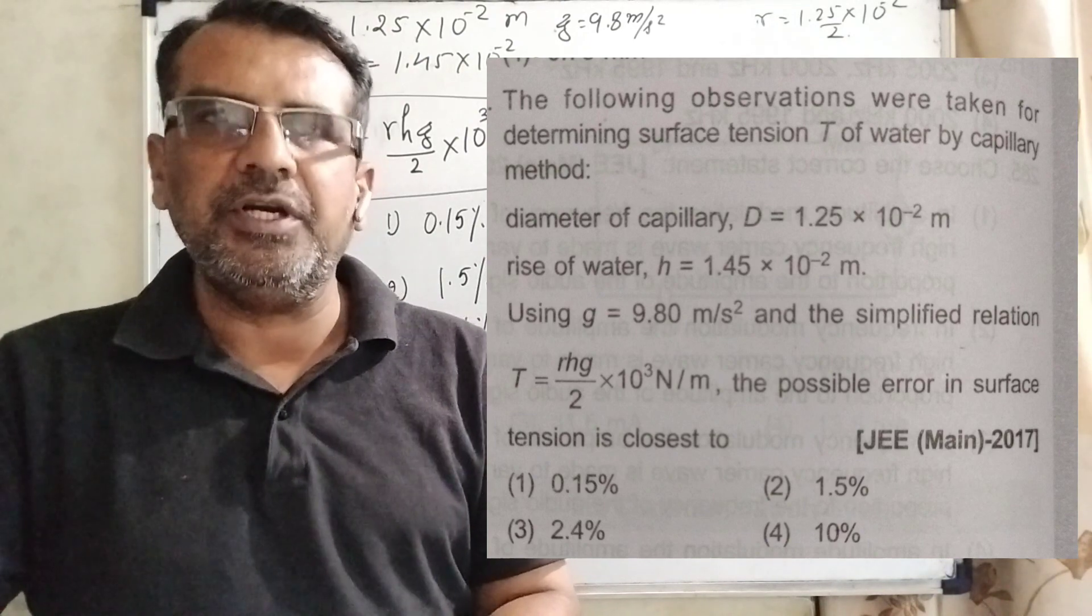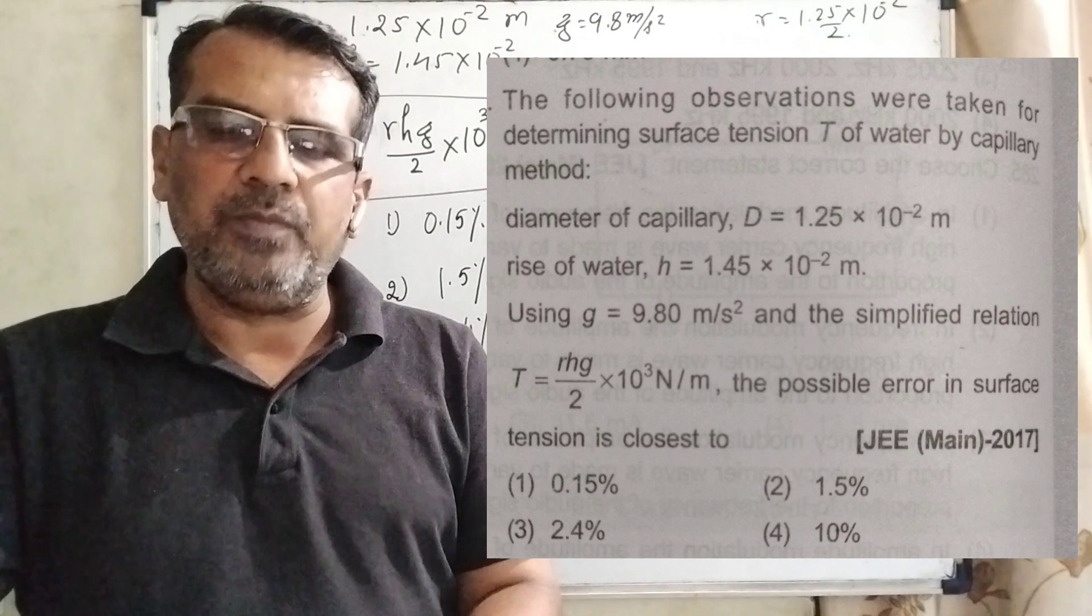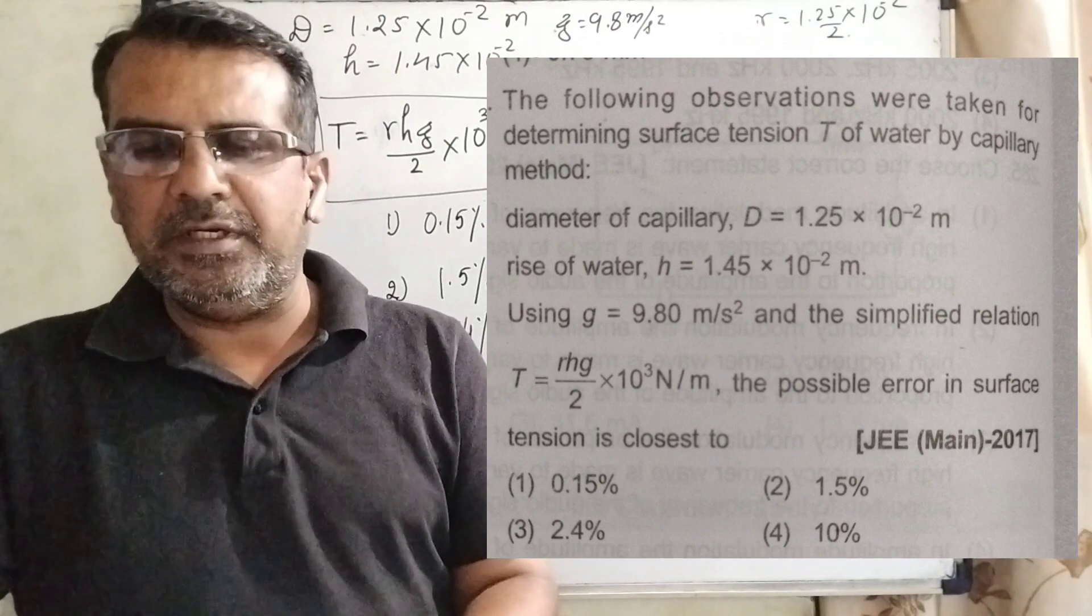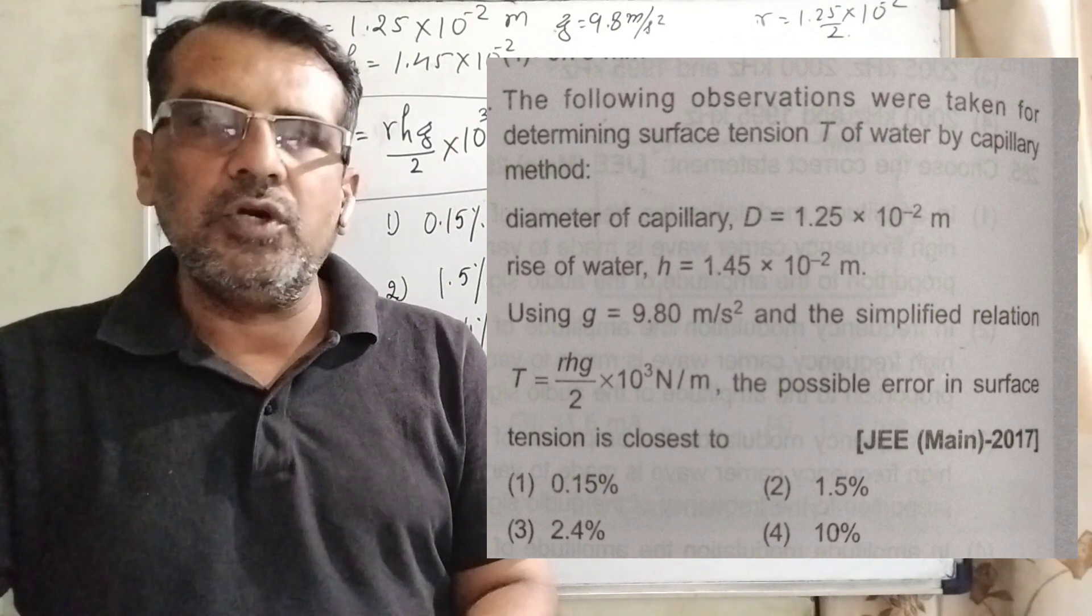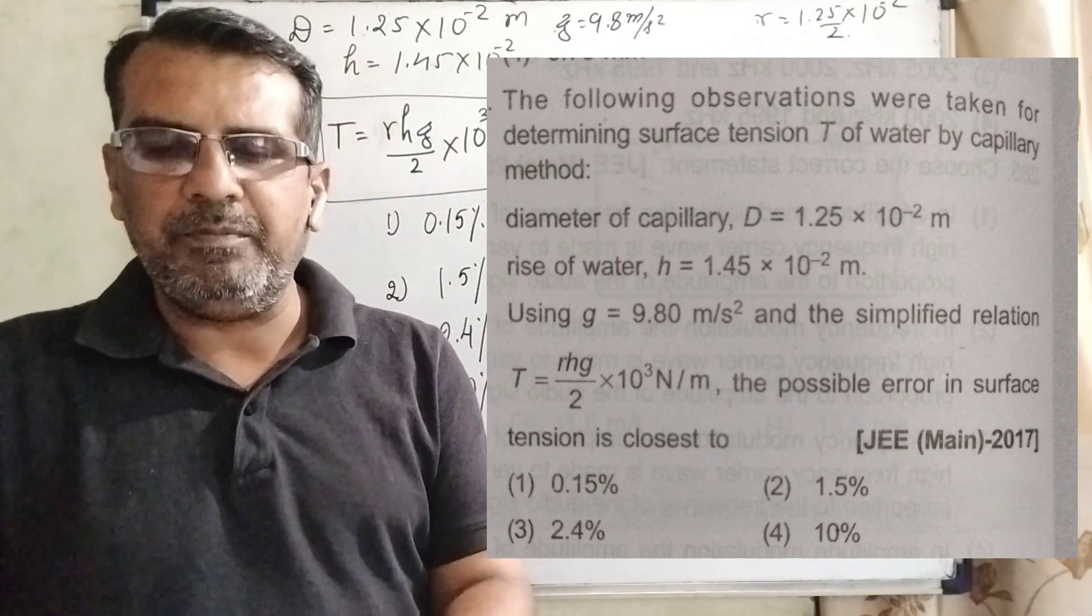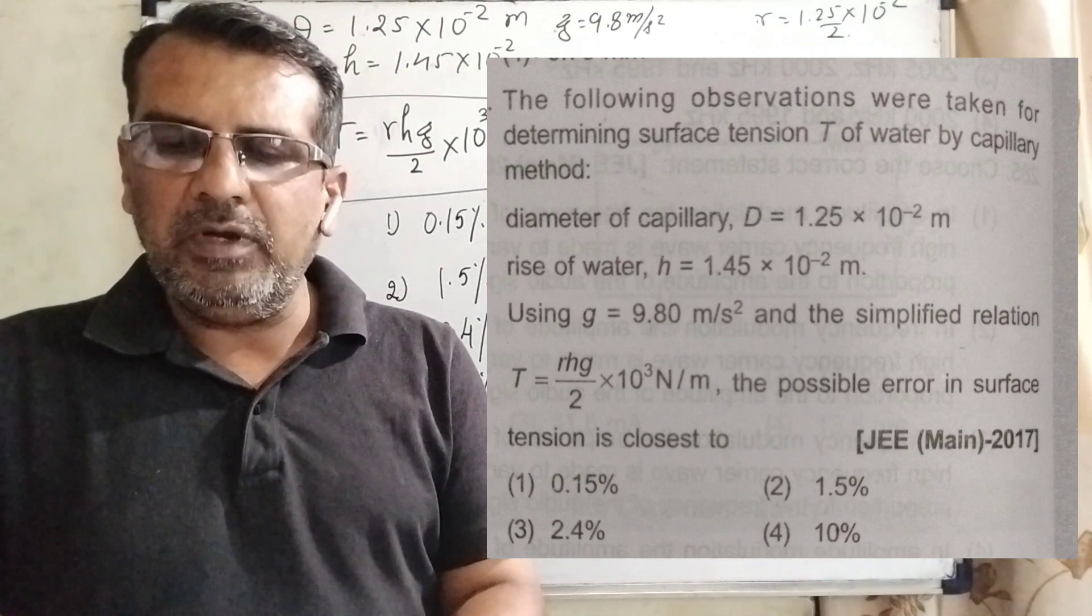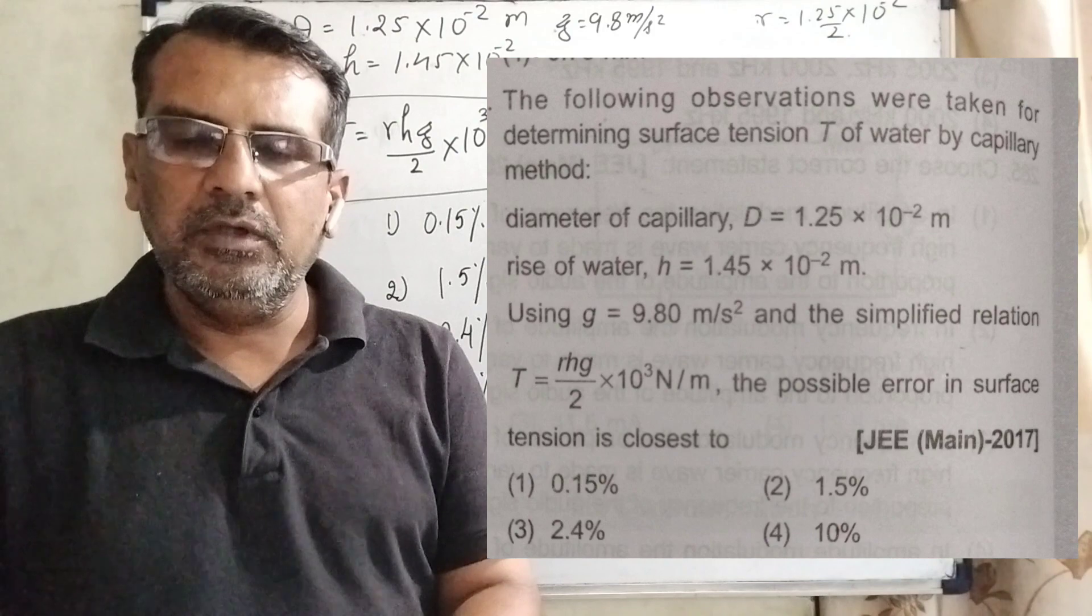And the simplified relation T equal to RHg by 2 into 10 raised to power 3 Newton per meter. The possible error in surface tension is closest to: first 0.15 percent, second 1.5 percent, third 2.4 percent, and fourth 10 percent.